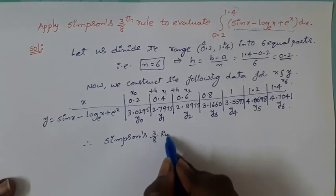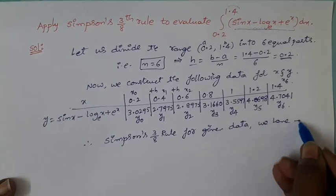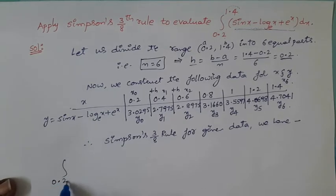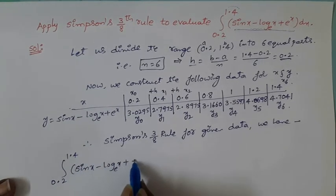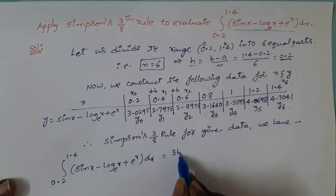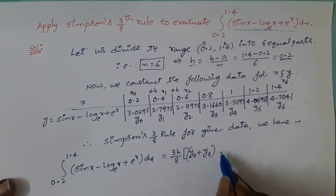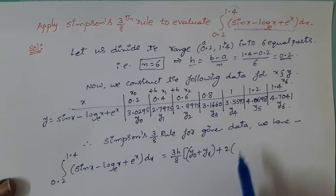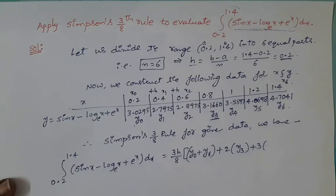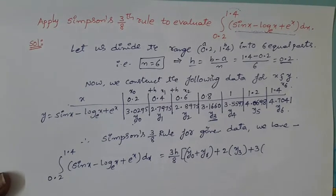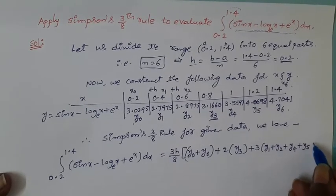According to Simpson's 3/8 rule for given data, the integral from 0.2 to 1.4 of sin(x) minus log(x) base e plus e^x dx equals 3h/8 times [y0 plus y6, plus 2 times y3, plus 3 times (y1 plus y2 plus y4 plus y5)]. These are the remaining terms between first and last.